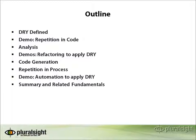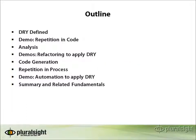In this module, we'll start out by defining the Don't Repeat Yourself Principle, and then we'll go through a demo showing how misuse of this principle results in spaghetti code that's very difficult to maintain. After a little bit of analysis, we'll go through a series of demos showing how we can refactor such code to dry it up and make it much easier to maintain. We'll briefly look at some code generation options before moving on to show what repetition in your process can do and how it adds to waste. And then we'll show a quick demo of how we can automate our process to apply DRY as well. Finally, we'll wrap up with the summary and related fundamentals.